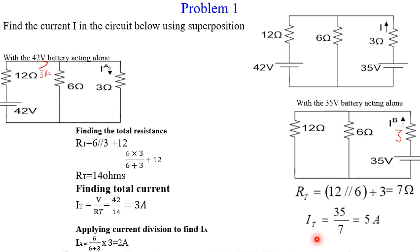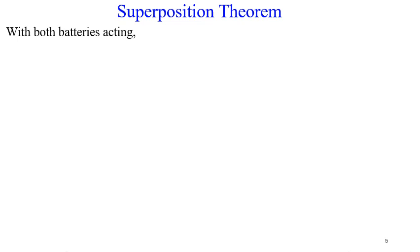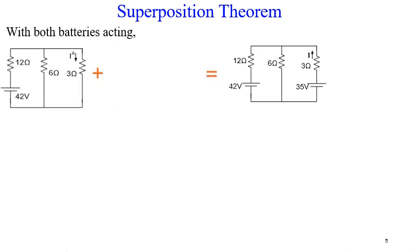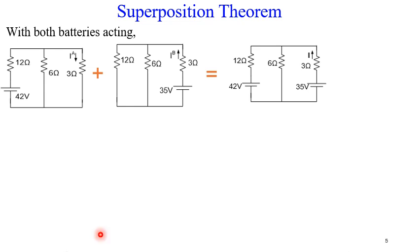After getting our total current of 5 amps, we now know IB — the current through the 50-ohm branch in this configuration. We have now calculated both IA equals 2 amps and IB equals 5 amps. We draw the whole circuit back with both sources acting together to combine the results.